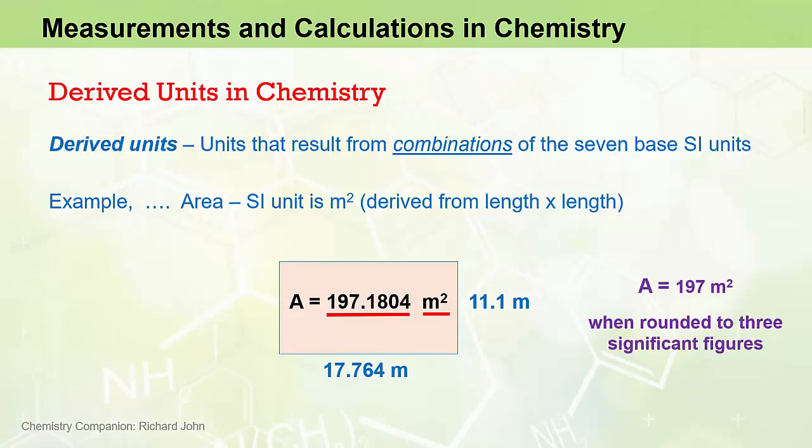Now just a side note here, in a subsequent video we will learn that the area of the rectangle is more correctly stated as 197 metres squared when the concept of significant figures is taken into account. So if you're unsure of the concept of significant figures as a way of quantifying the uncertainty in derived values, then be sure to watch that video.